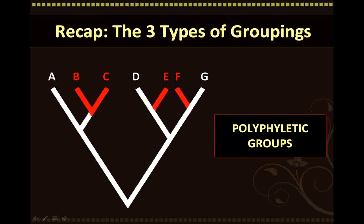And thirdly, we have polyphyletic groups. Polyphyletic groups include taxa whose ancestor does not belong to the group. These groups have at least two separate evolutionary origins, and they can be thought of as a random assortment of species. In this case, organisms that appear very similar may only be distantly related; however, we can incorrectly classify them into the same group due to their superficial similarities, which can occur due to convergent evolution.